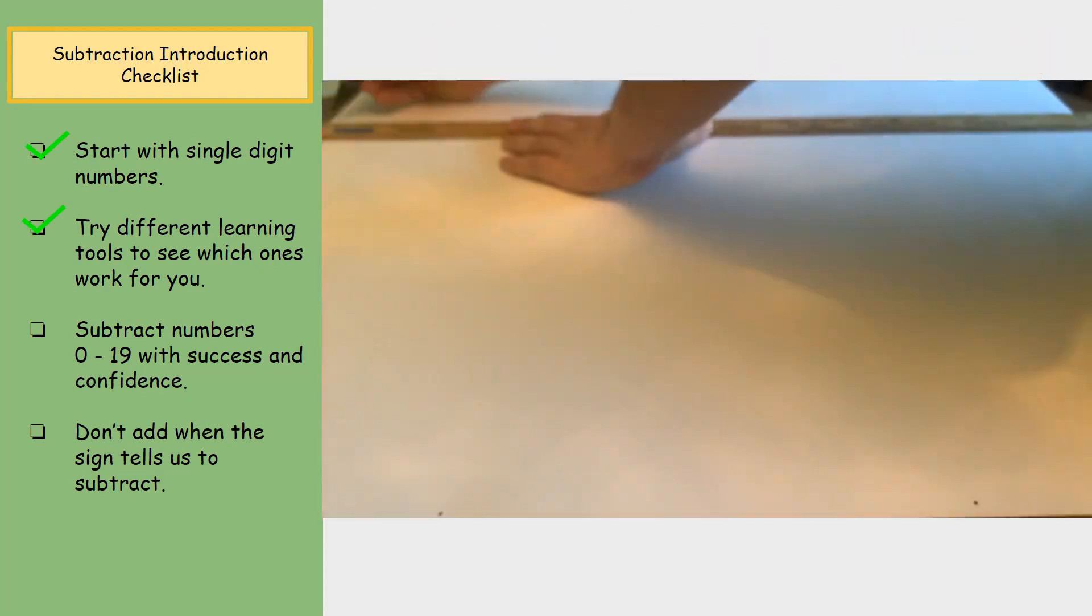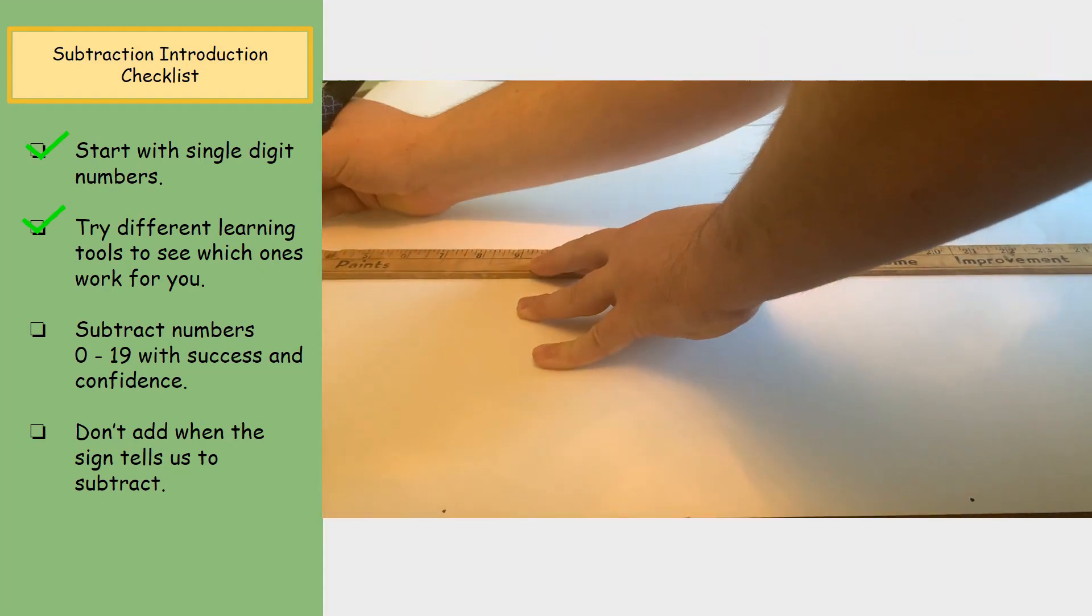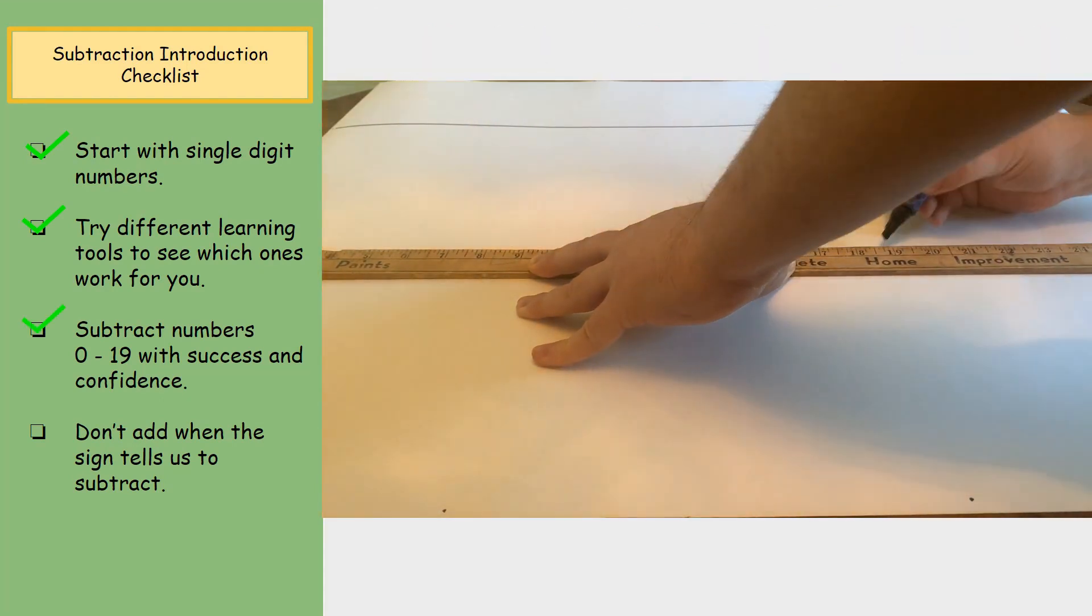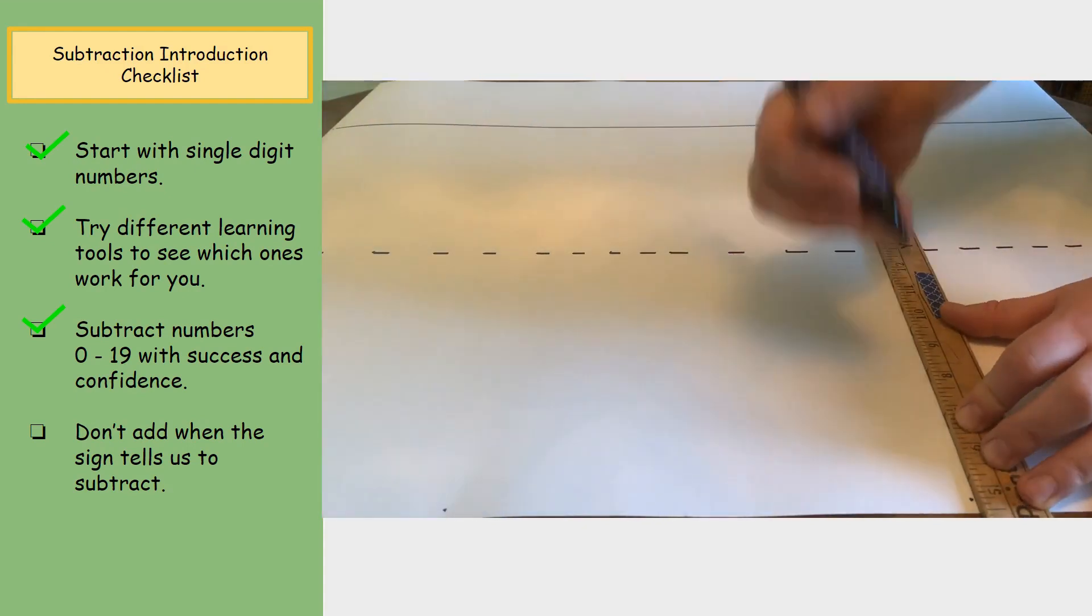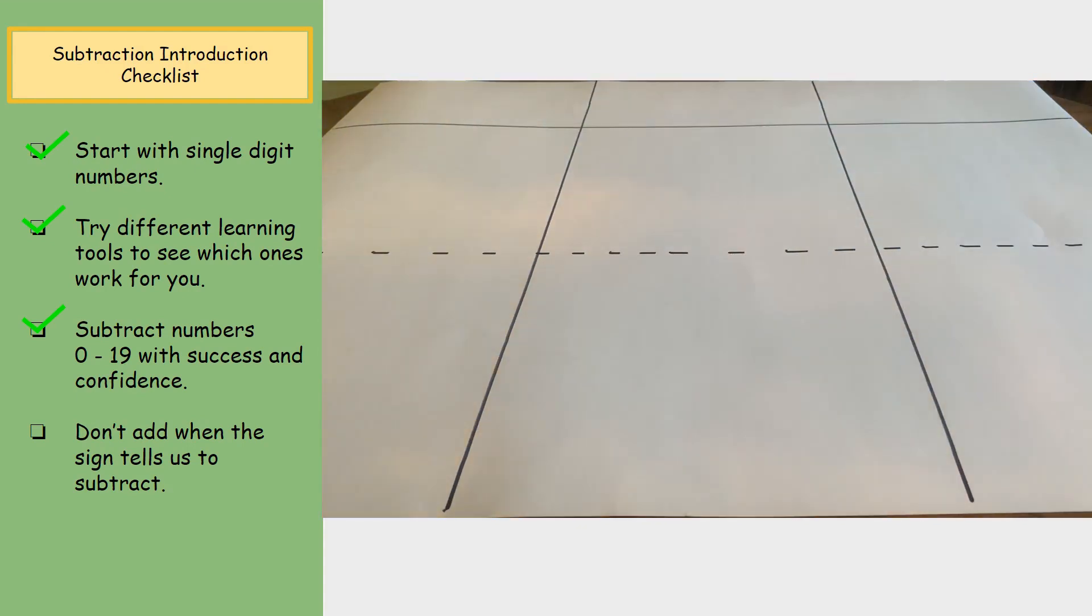Remember, the long-term goal is to subtract numbers from 0 to 19 with success and confidence. Achieving this will take learners different amounts of time. And always remember don't add when the sign tells you to subtract.